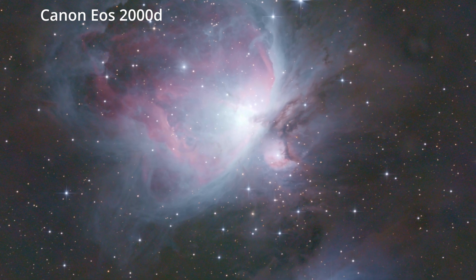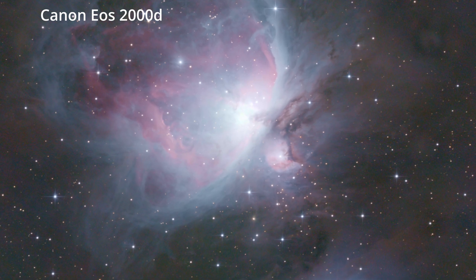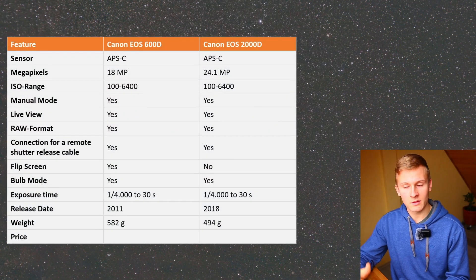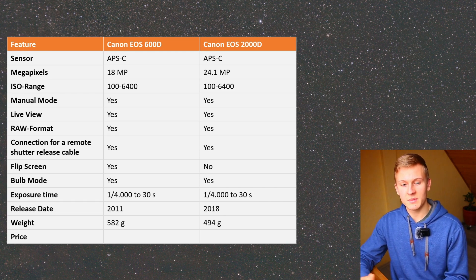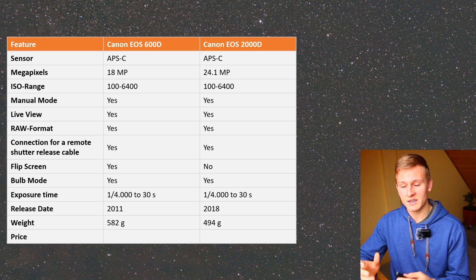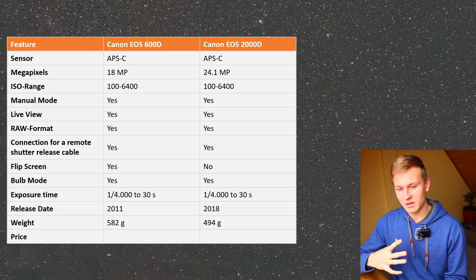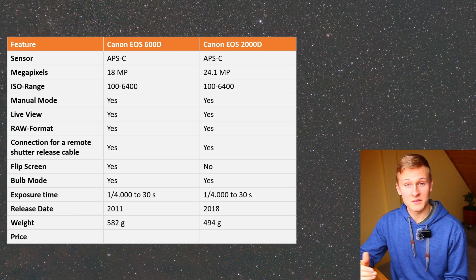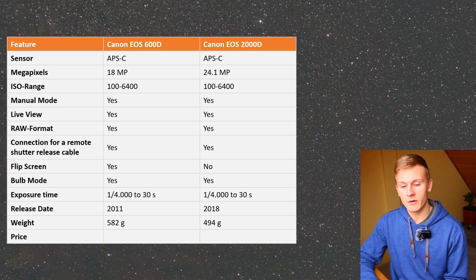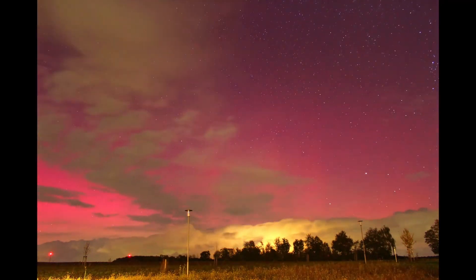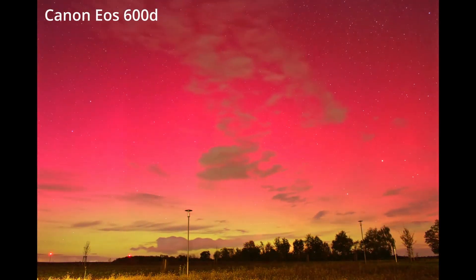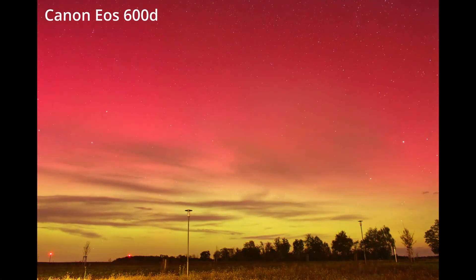The next aspect is camera weight. In astrophotography it's important that your camera is not too heavy, especially when using a portable mount or star tracker. The Canon EOS 600D is slightly heavier, but the difference is not that big. When it comes to price, however, there is a significant difference: I bought the Canon EOS 2000D for around 350 euros with the kit lens (18-55mm), and the Canon EOS 600D used for around 110 euros.